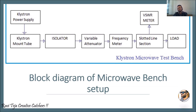The slotted line section is also connected to a VSWR meter, and can also be connected to a CRO to take readings. VSWR is voltage standing wave ratio. We can measure or take readings of a particular signal passing from the klystron mount tube through the bench using the VSWR meter or CRO connected through the slotted line section.